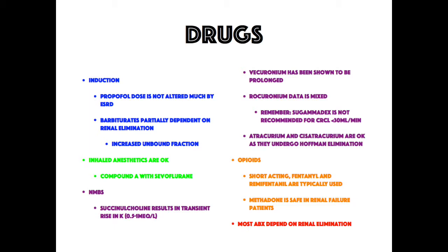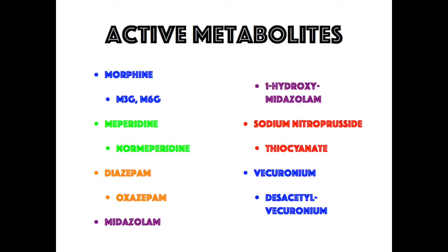For opioids, short-acting agents like fentanyl and remifentanil are typically used. Methadone is also safe in renal failure patients. Most antibiotics, including cephalosporins, are dependent on renal elimination, so when redosing, check with your pharmacist or online resources for appropriate dosing intervals.